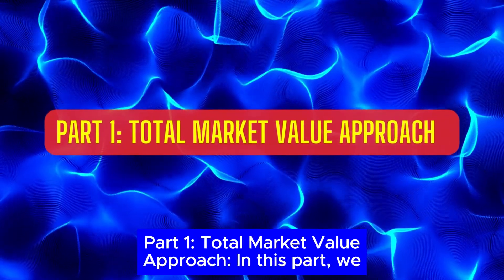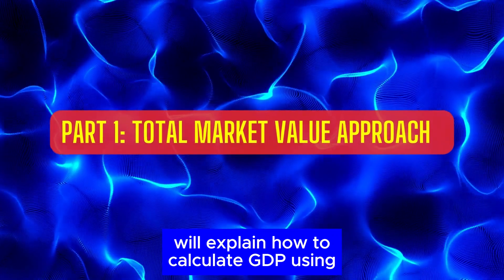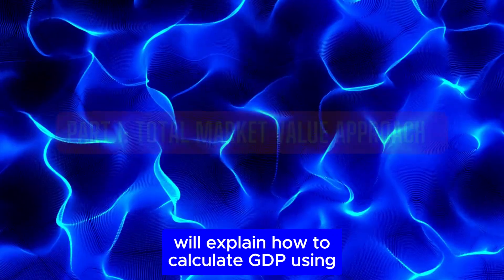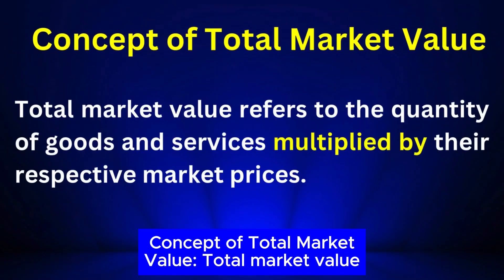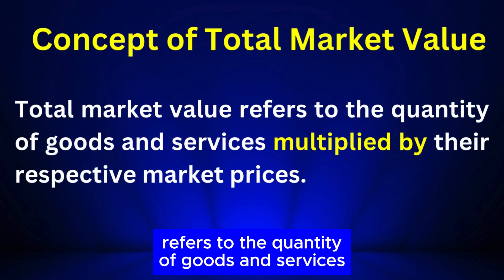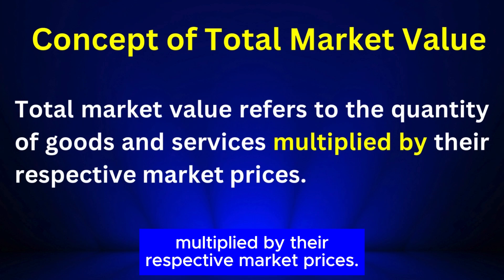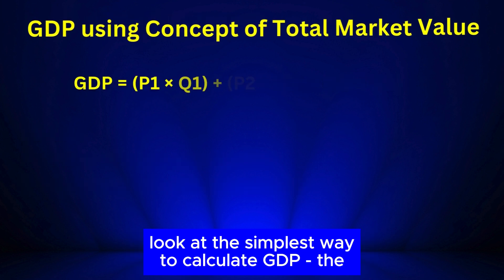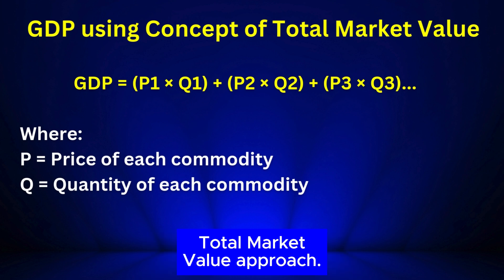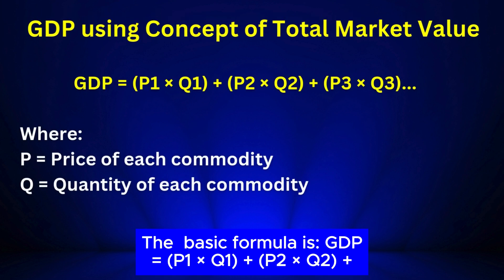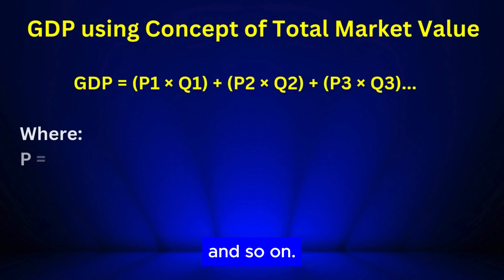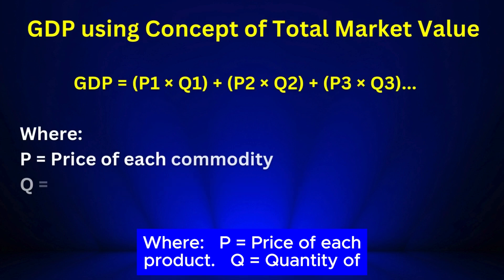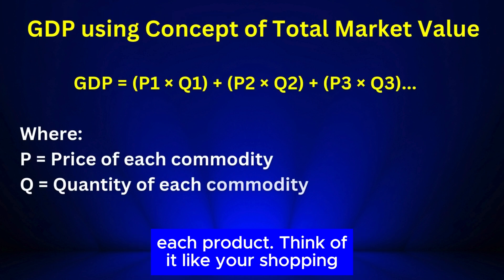Part one: Total Market Value Approach. In this part we will explain how to calculate GDP using the definition of total market value. Total market value refers to the quantity of goods and services multiplied by their respective market prices. The basic formula is: GDP = P1×Q1 + P2×Q2 + P3×Q3 and so on, where P equals the price of each product and Q equals the quantity of each product.